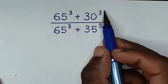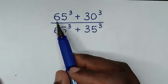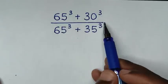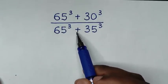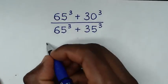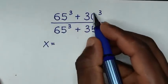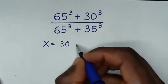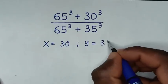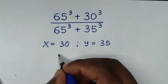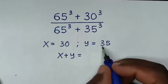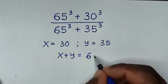Hello, you are welcome to solve this math problem which is 65 power 3 plus 30 power 3 over 65 power 3 plus 35 power 3. So first we will let x equal to 30 and y equal to 35. Then x plus y is equal to 30 plus 35 which is 65.